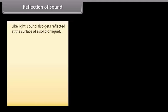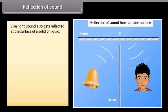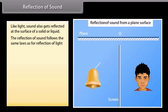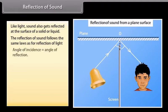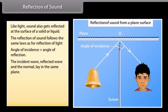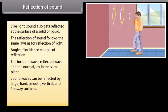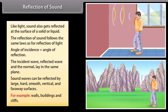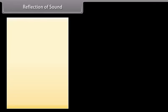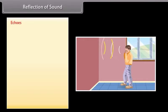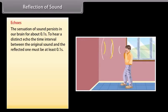Reflection of sound. Like light, sound also gets reflected at walls, buildings, and cliffs. Echoes are produced by the reflection of sounds from such surfaces. The sensation of sound persists in our brain for about 0.1 second. To hear a distinct echo, the time interval between the original sound and the reflected one must be at least 0.1 second.